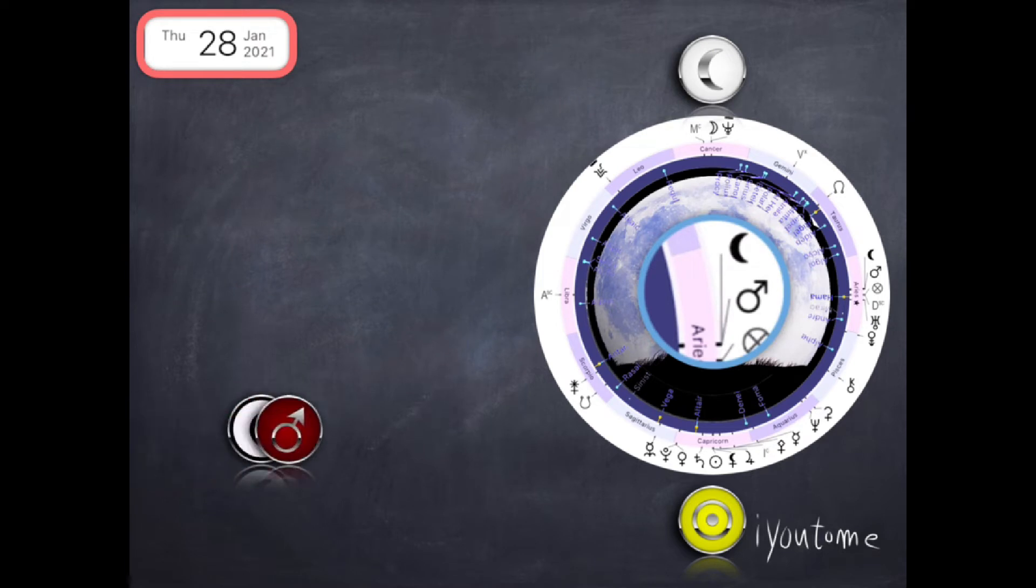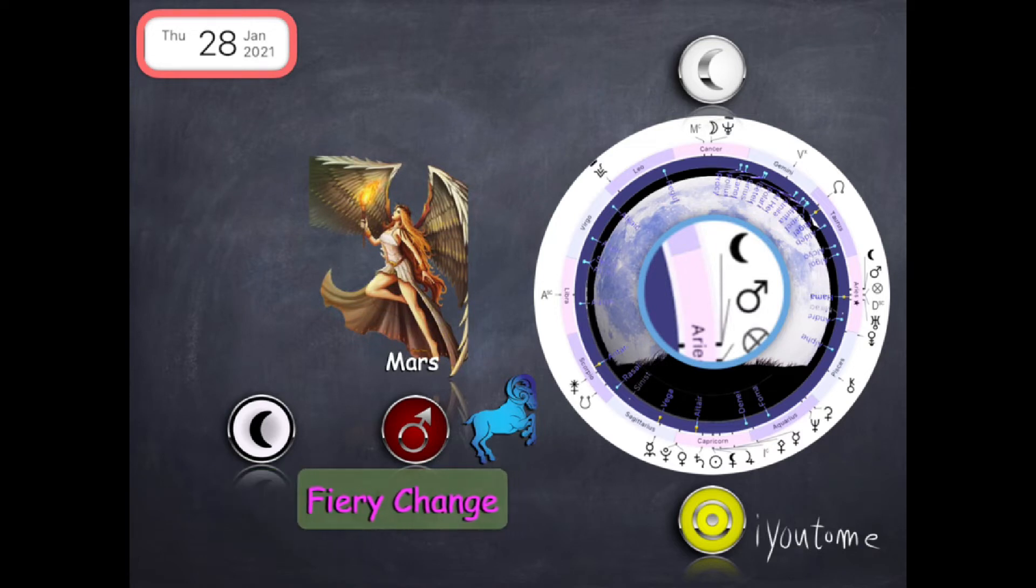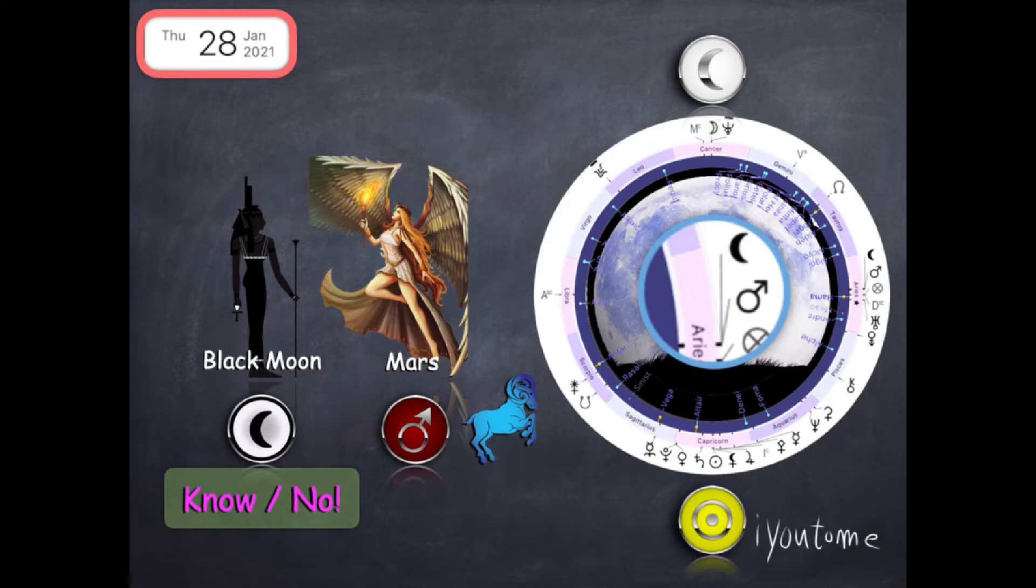Next we have Mama's black moon aligned with Mars in Aries, our head. Mars, whom brings fiery change to your physical body, aligns with Mama's black moon who will help you gain knowledge on when to say no.